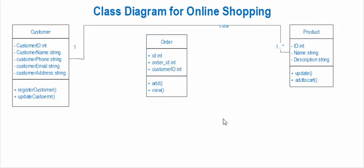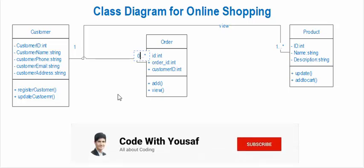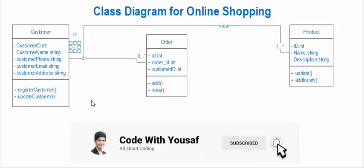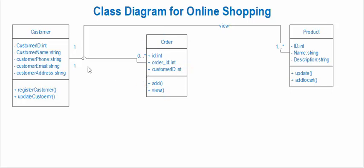Let's create the relationship between customer and order. It is one-to-many, meaning a customer may have zero or more orders, and each order must be related to exactly one customer.